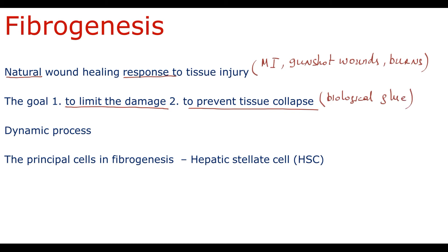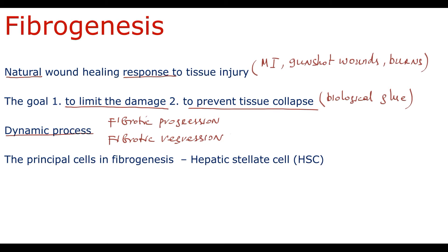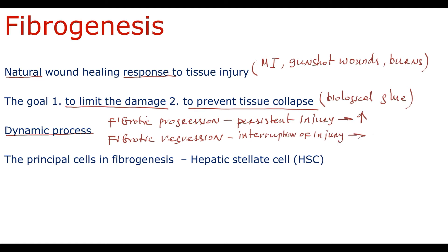Fibrosis is a dynamic process. This means that with chronic injury there will always be areas of fibrotic progression as well as fibrotic regression — everything depends on disease activity. For example, in alcoholic hepatitis, if a patient continues to consume alcohol, this causes persistent injury with inflammation in liver parenchyma, and inflammation is accompanied by fibrosis, so fibrotic progression prevails. But with cessation of alcohol consumption, the chronic injury is interrupted and without inflammatory processes, fibrotic regression prevails. The principal cells responsible for scar tissue production are hepatic stellate cells.